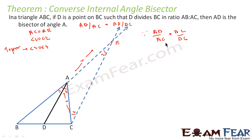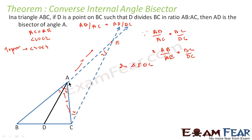Since AB by AC is equal to BD by DC, and AC is also equal to AE, we can say that AB by AE is equal to BD by DC. In triangle BCE, we can see that AB by AE is equal to BD by DC. Therefore, using the Thales theorem, we can say that AD is parallel to CE.